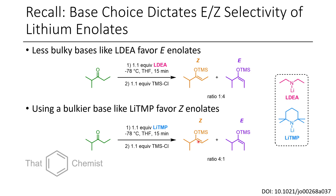While these ratios do favor one enolate over the other, they're still not entirely selective. But once we start looking at boron enolate formation, we can get very high selectivity — greater than 99 to 1. So it's quite advantageous to use boron-containing enolates.